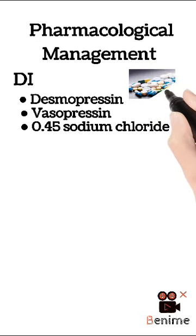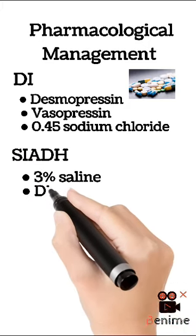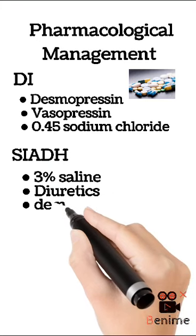We treat syndrome of inappropriate antidiuretic hormone with 3% saline, diuretics to get rid of the fluid and demeclocycline.